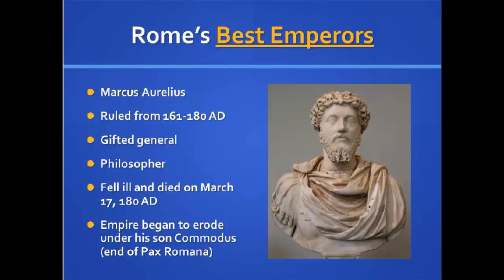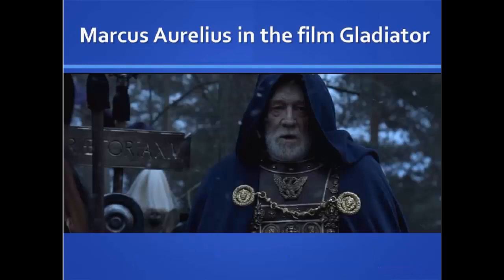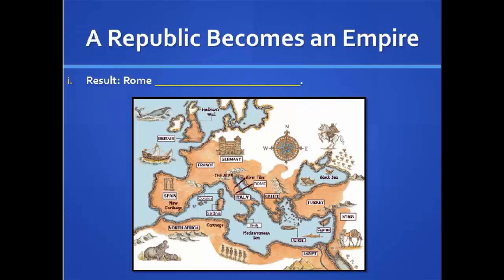Back to some of the other emperors. Marcus Aurelius ruled from 161 to 180 AD — a very gifted general who expanded the empire and was a philosopher, a very smart man. He fell ill and died on March 17th, 180 AD. Right at his death, the empire began to erode under his son Commodus, leading to the end of the Pax Romana. Here's a depiction of him from the movie Gladiator. This is basically the end of the high point of Rome's successes. Marcus Aurelius did a lot of conquering and expanded land greatly, but this was the beginning of the end for the strength of the empire — he was the last real leader who kept it all together.